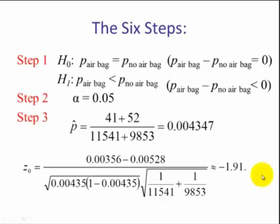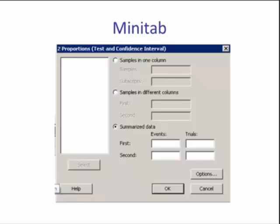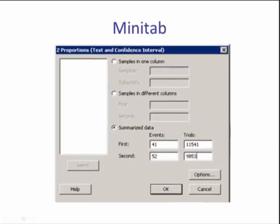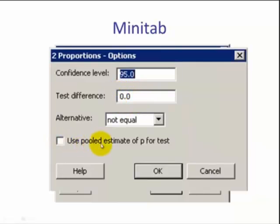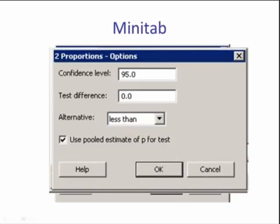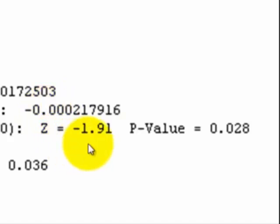In Minitab, we go to Stat, Basic Statistics, To Proportions. We have summarized data, so we select Summarized Data. And for the first we're going to put our airbags. Events is our X, 41. Trials is n, which is 11,541. The second is non-airbags, which is 52 deaths. And that's out of 9,853. We click Options. Test difference is zero. That's what we want. We have to click Use Pooled Estimate for P for Test. And then in the alternative we have to change it from a not equal to, a two-tailed test, to a left-tailed test, a less than. We click OK. And in the session window we see that the z score is a negative 1.91. The p-value, which is step four, is 0.028.